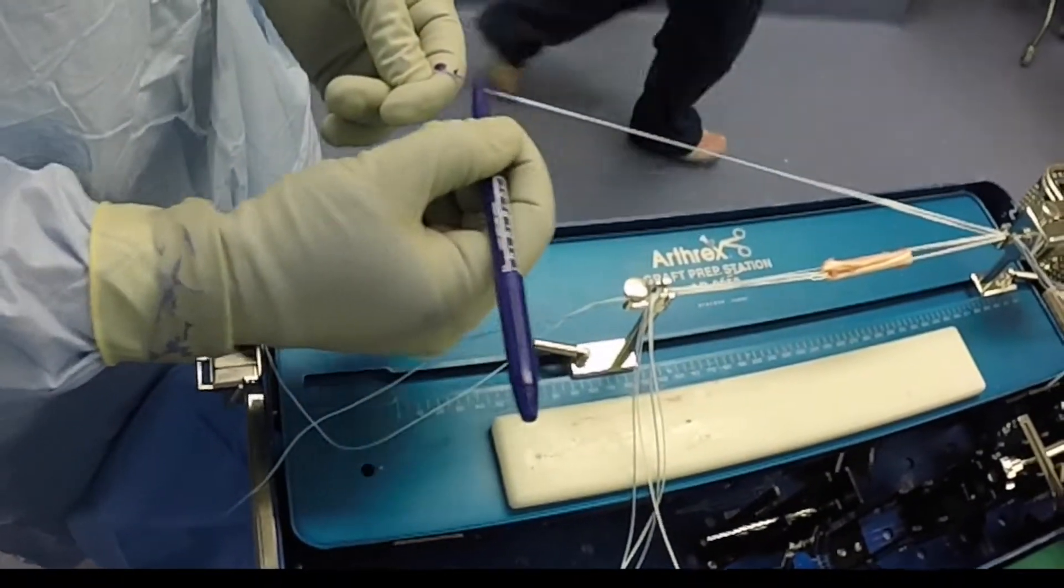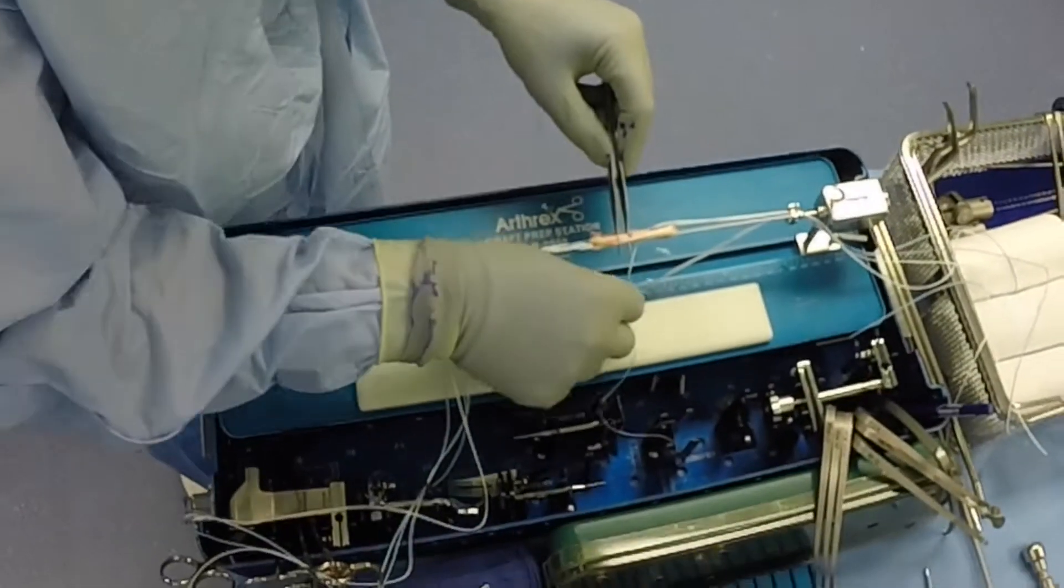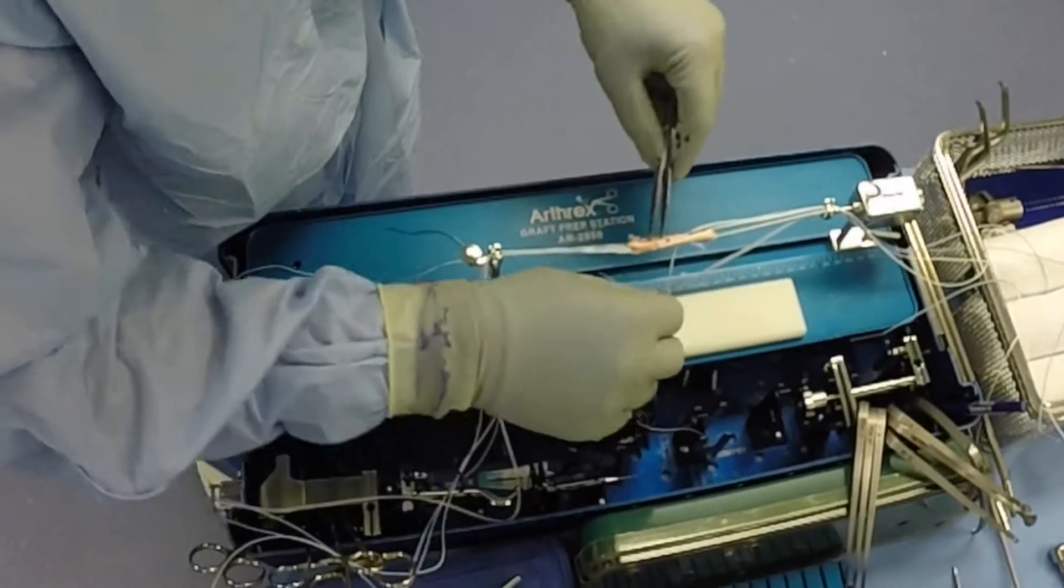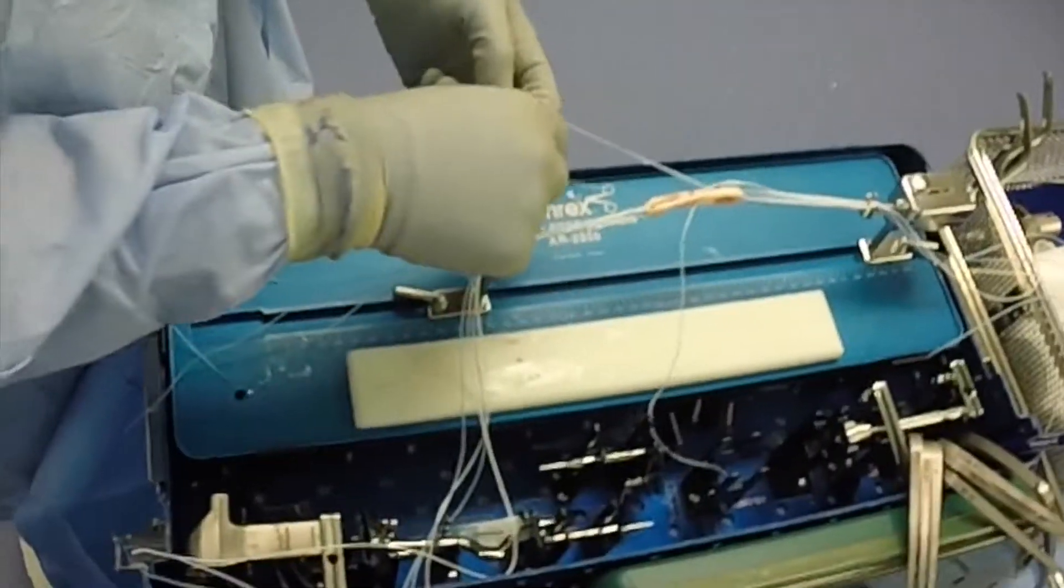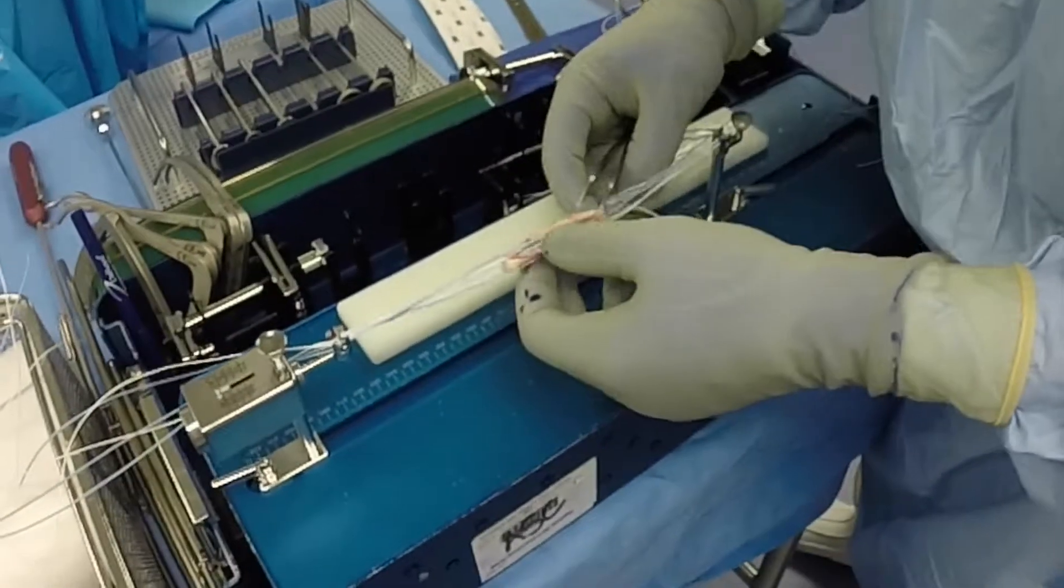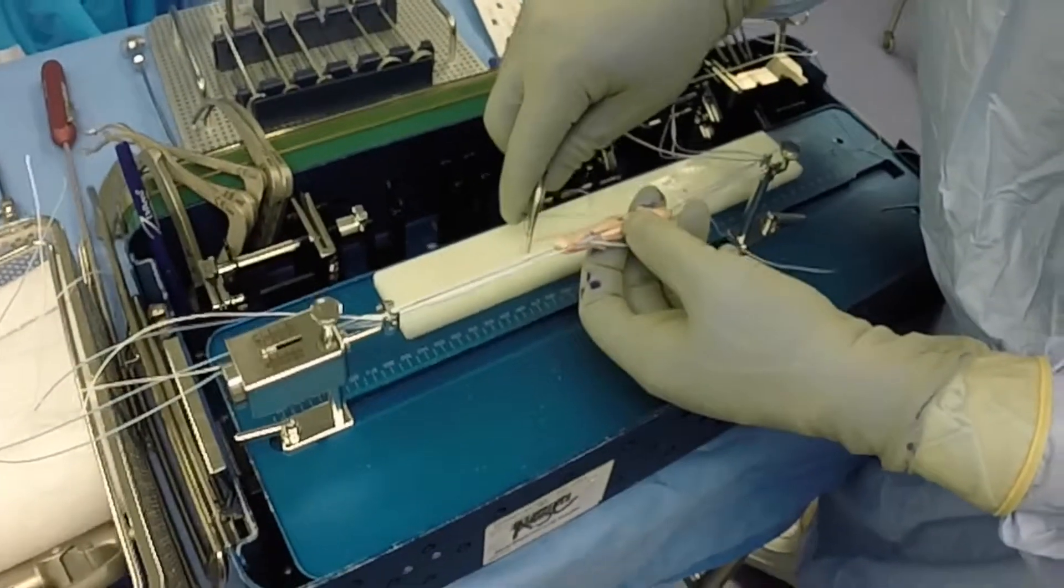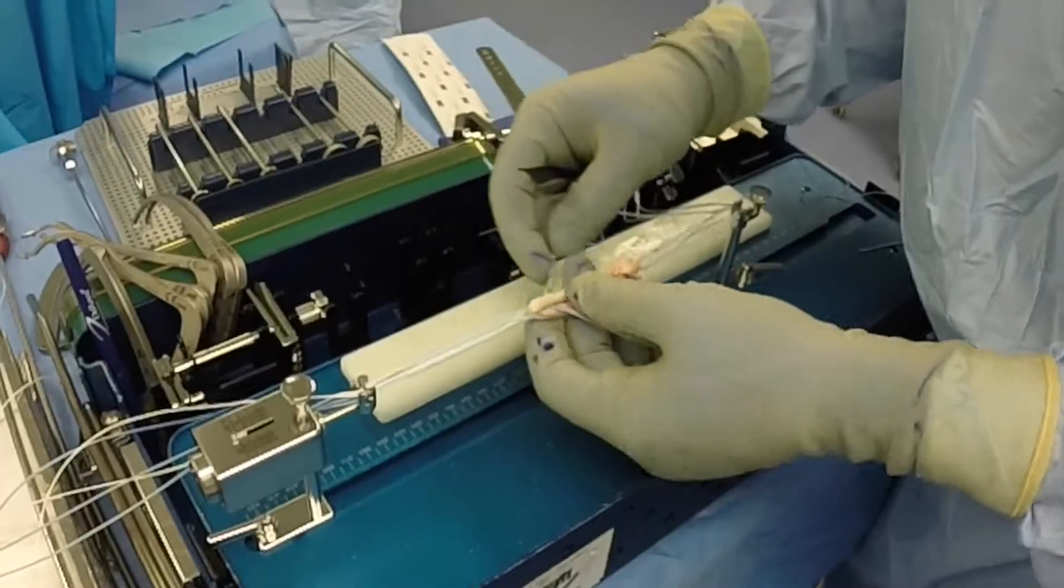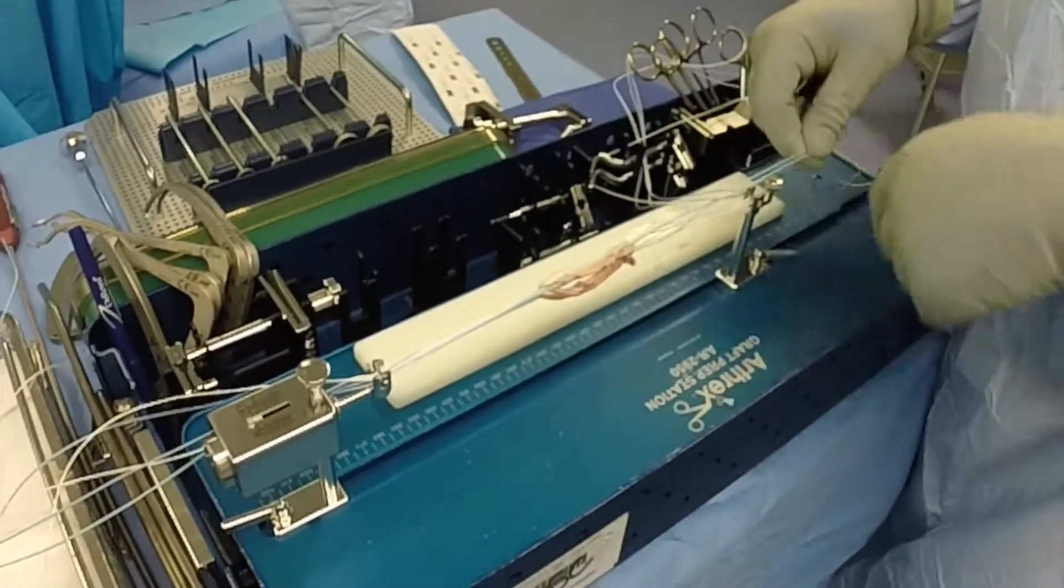The FiberTape sutures are then marked for easy identification upon suture passage and passed in a crosswise fashion centrally within the graft such that they will be buried within the graft in the intra-articular portion.